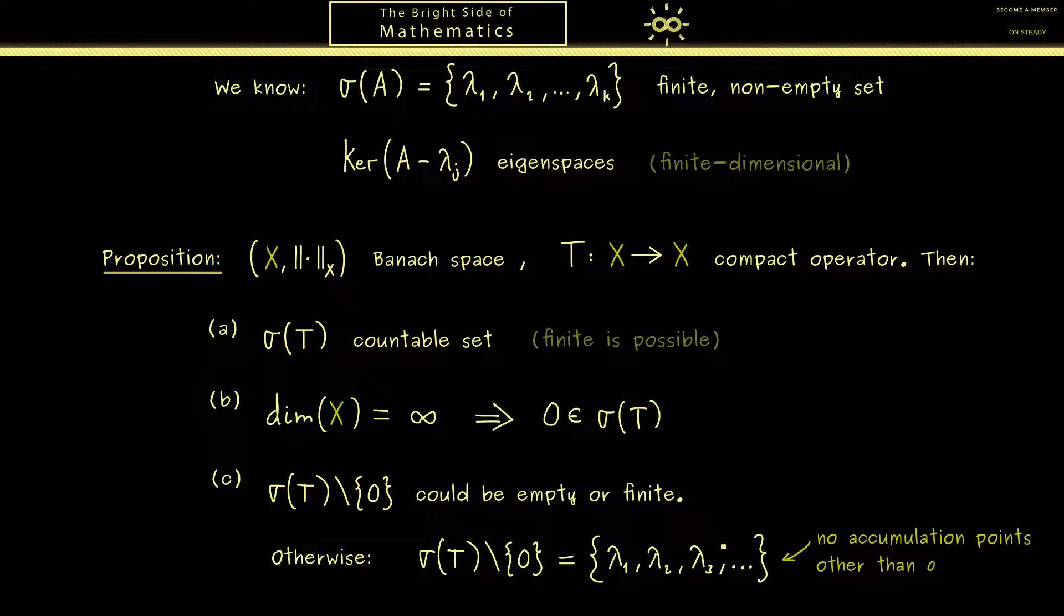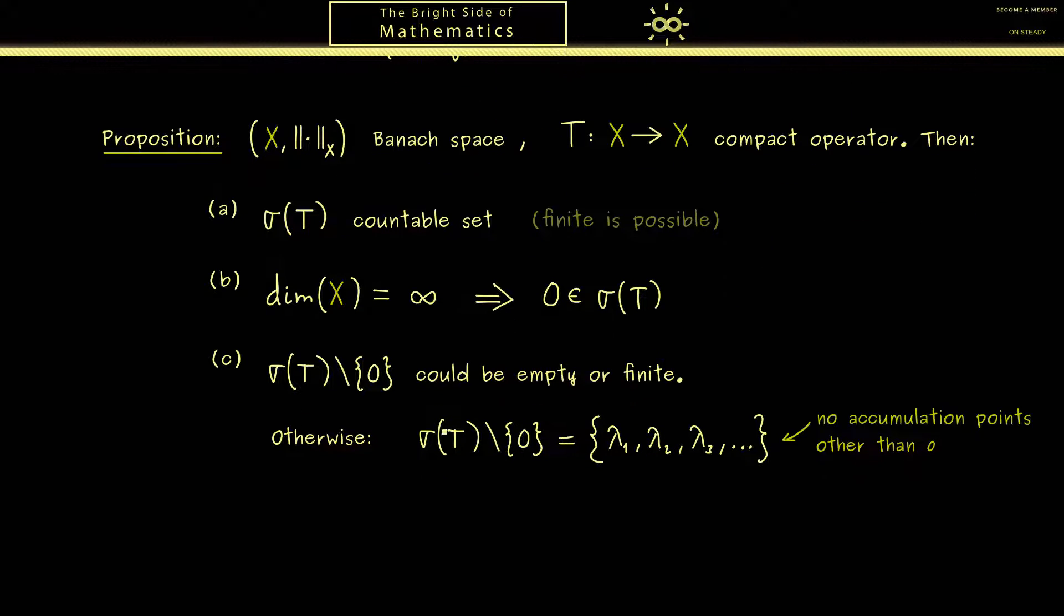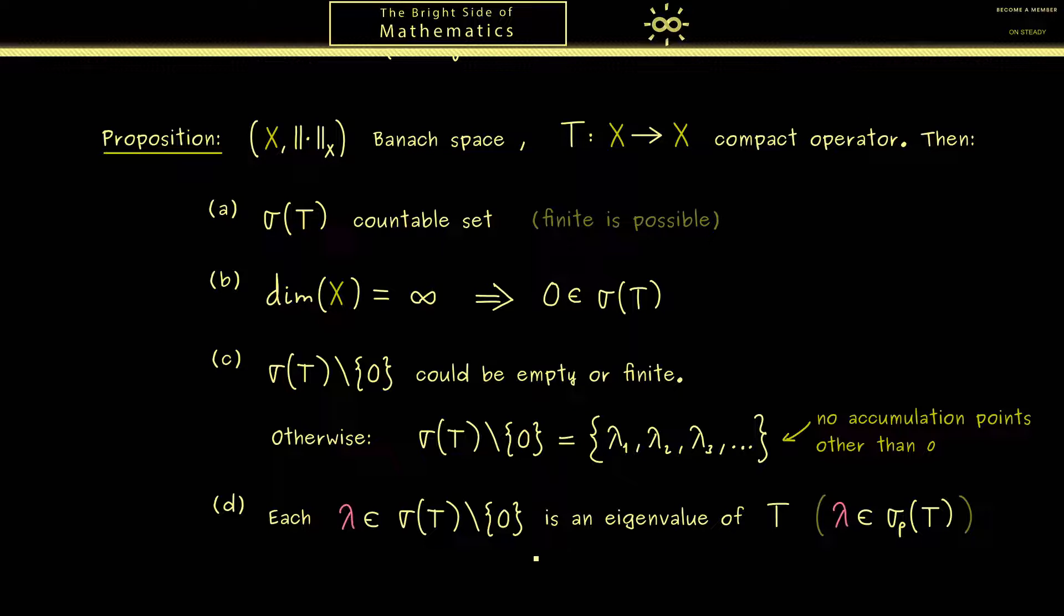So you see, this is an important property of the spectrum of a compact operator. Moreover, in fact what we can conserve from the finite dimensional case, is that these points here are in fact eigenvalues. So we don't know if 0 is an eigenvalue, but all the other points are. So in other words, such a point lambda here lies in the point spectrum of T. So this is a good thing, because it means for compact operators, you can still work with eigenvectors.